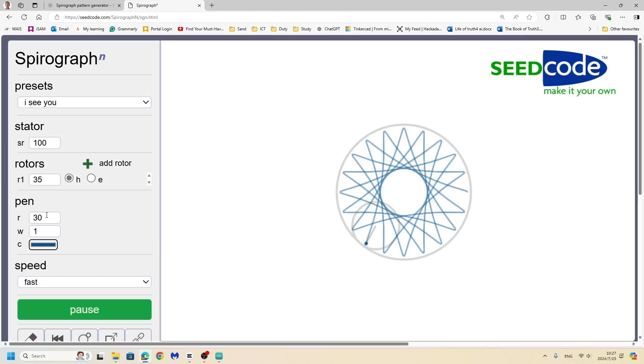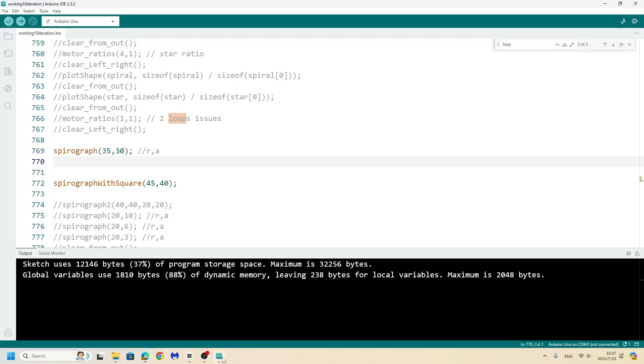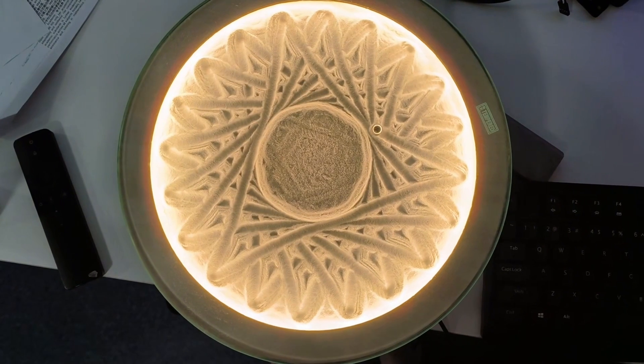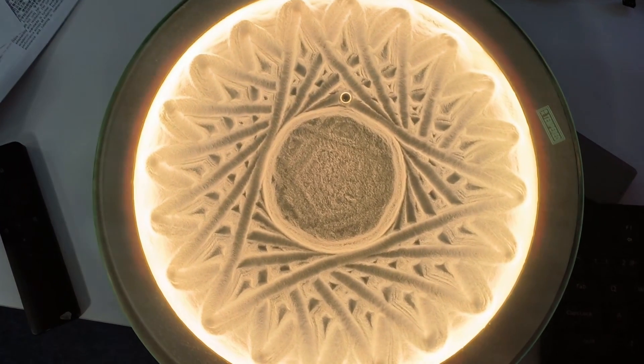You can also go to seedcode.com and simulate these different variables and it'll show you what you're going to get. With putting those variables in, 35 for the smaller spinning wheel and 30, we can run the function and see what it looks like on our sand table.